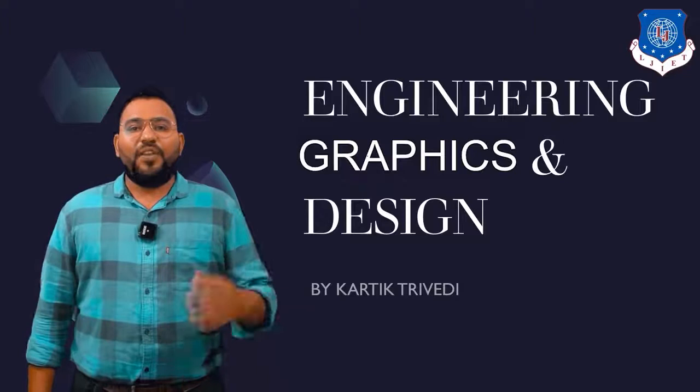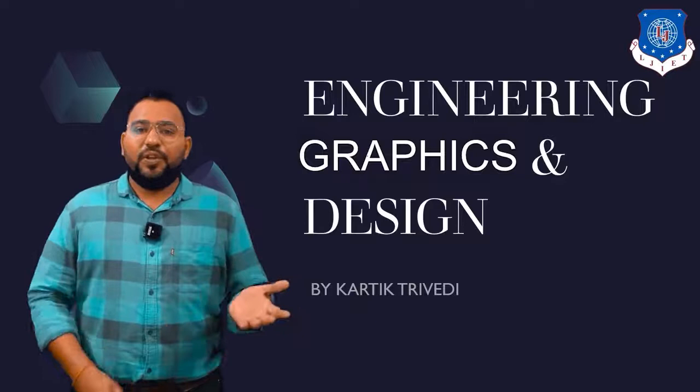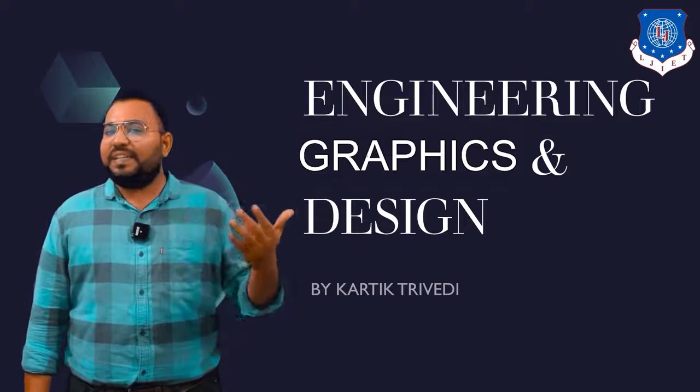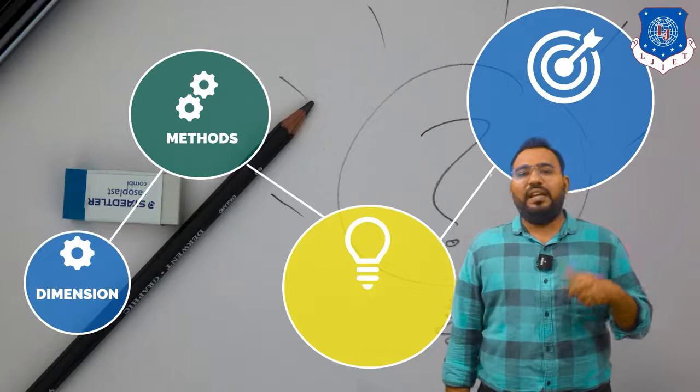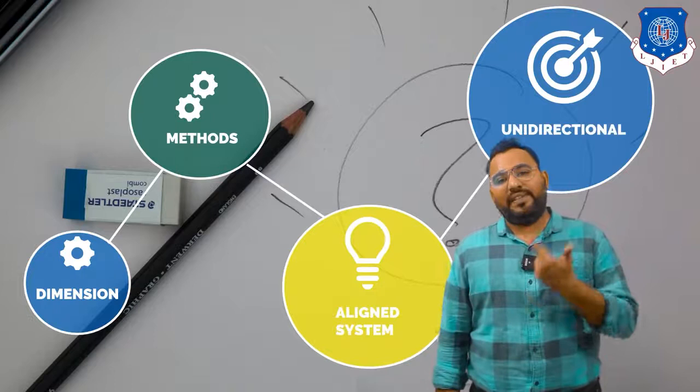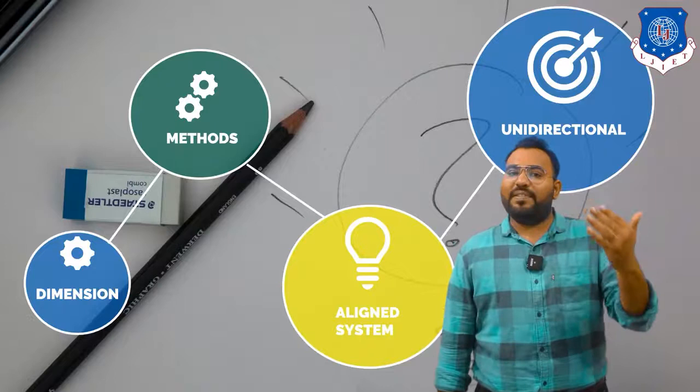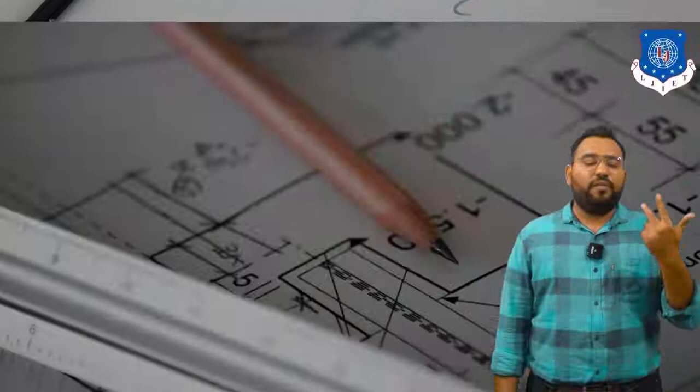Hi students, this is Karthik Trivedi and you are watching a lecture series of engineering graphics and design. In the last video we saw the different types of instruments required in engineering graphics and design, and the different types of lines and their importance. In this video we are going to see: first, what is dimension; second, methods of dimensioning; third, aligned system; and fourth, unidirectional system, including subtypes like parallel dimensioning and chain dimensioning.